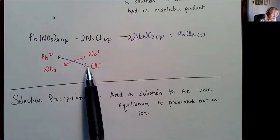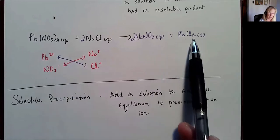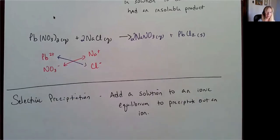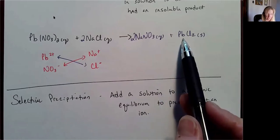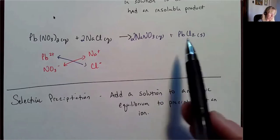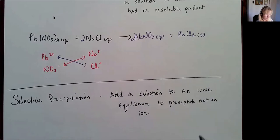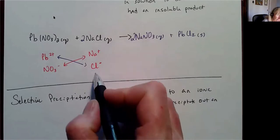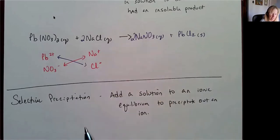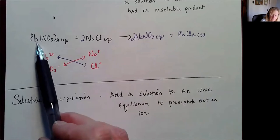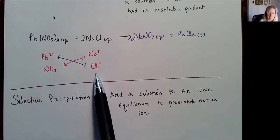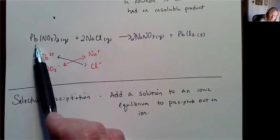Once I precipitate this into a solid, I can spin that test tube down, pull my supernatant, and my liquid is no longer going to contain any of those lead ions because they will have all precipitated out. The trick is that I have to add an ion that's going to precipitate the ion I want to remove, and I have to add it in sufficient quantities to remove all of that lead ion.